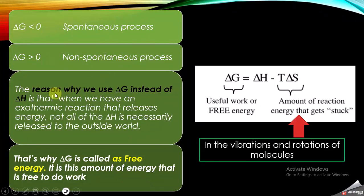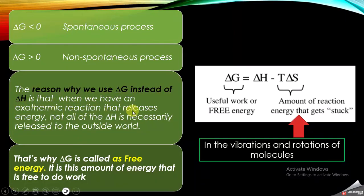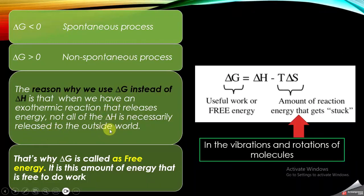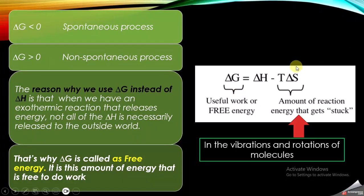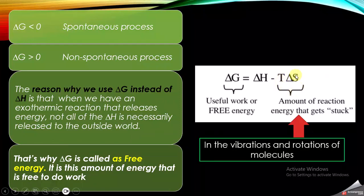The reason why we use delta G instead of delta H is that when we have an exothermic reaction that releases energy, not all of the delta H is necessarily released to the outside world for doing some kind of work. The amount of energy that is available for doing work is actually the Gibbs free energy — that's why it is called free energy. Some of the energy which is stuck inside the molecule is called T delta S, and this is the amount of energy that is not available for doing any kind of work.